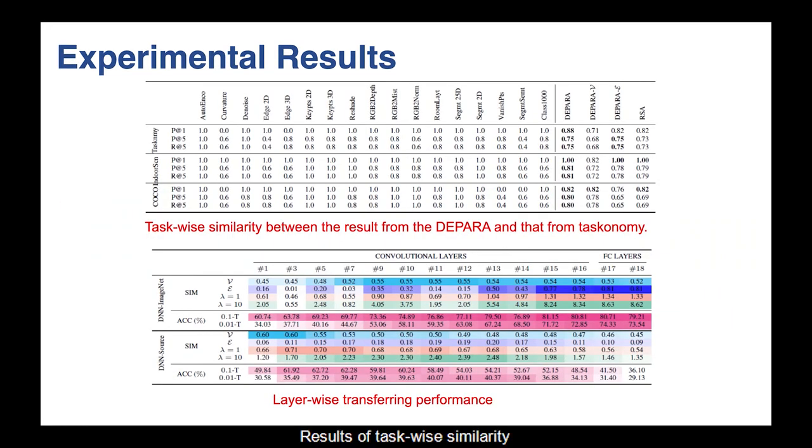Results of task-wise similarity and layer-wise transfer performance are shown in this slide. The task-wise similarity between DeepHara and Taskonomy is shown on the top. We can again see that DeepHara produces highly similar transferability results with that of Taskonomy. The layer-wise transfer results are shown on the bottom. Dark color indicates higher values. It can be seen that for layers which produce high accuracies, there are also high similarities in DeepHara.